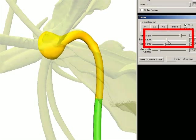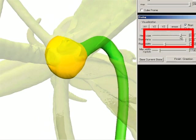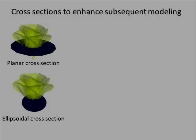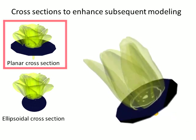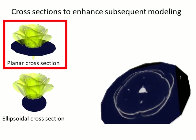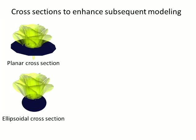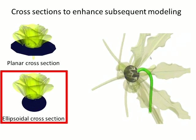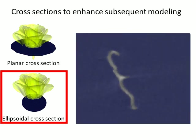The user interactively divides the shaft into stem and receptacle parts and modifies the radius of the top ellipsoid. To enhance the subsequent modeling process, we provide two types of cross sections. One is a planar cross section, useful for dealing with organs along a flower axis. The other is an ellipsoidal cross section, useful for modeling radially arranged organs.